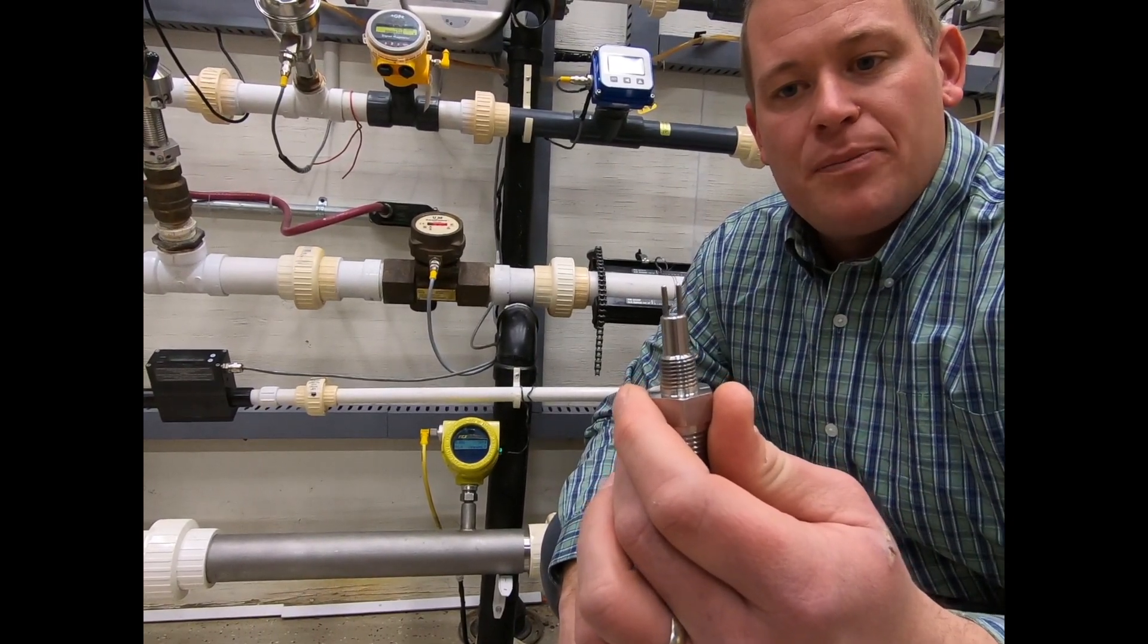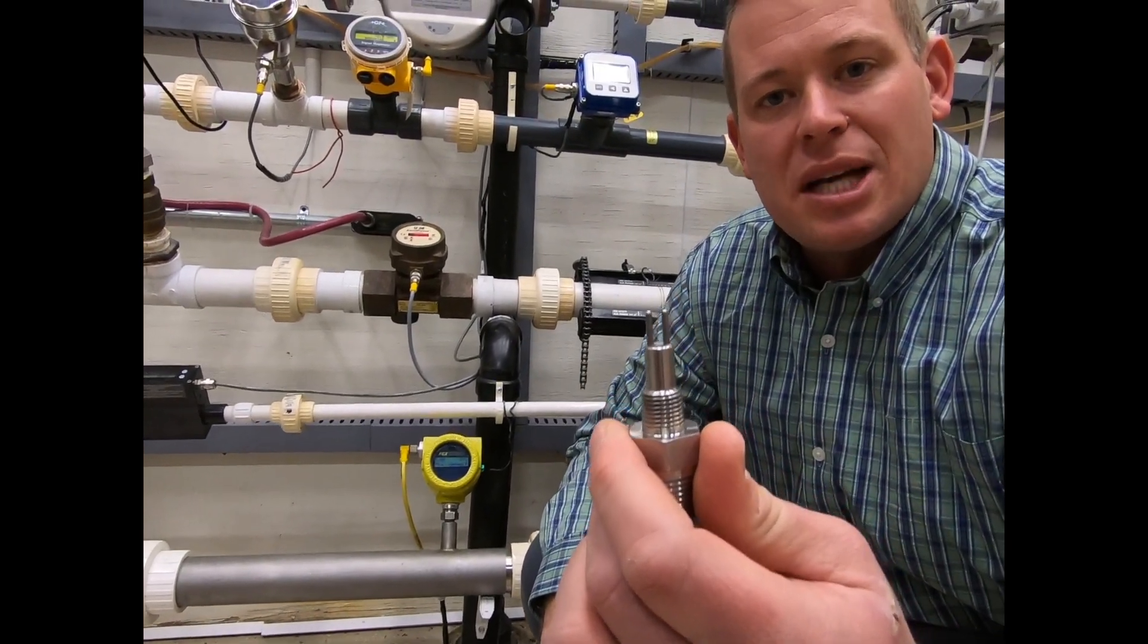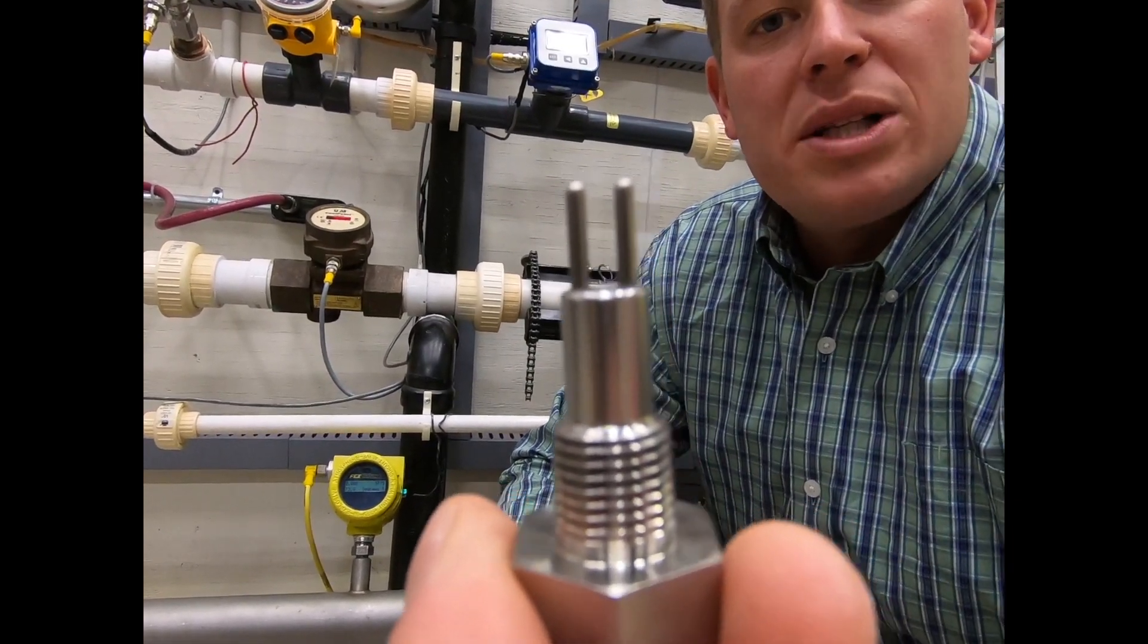Here I have a flow element from a flow meter, and you'll see I have two RTDs coming out of the end of this element. One's heated, one's not.